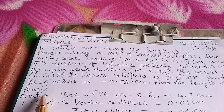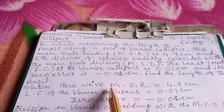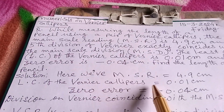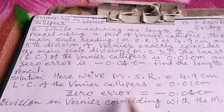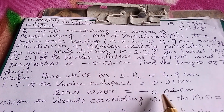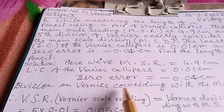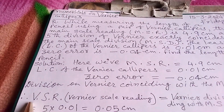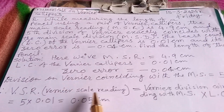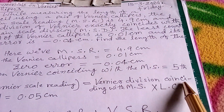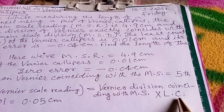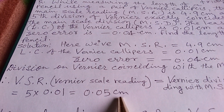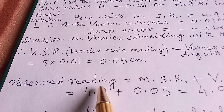The solution: here we have main scale reading = 4.9 cm, least count of the vernier calipers = 0.01 cm, zero error = −0.04 cm. The division on the vernier coinciding with the main scale is the fifth division. Therefore, the vernier scale reading = vernier division coinciding with main scale × least count = 5 × 0.01 = 0.05 cm.